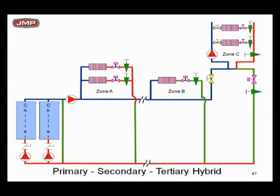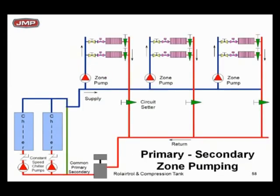Therefore, we call this primary-secondary-tertiary hybrid: it's got a little bit of primary-secondary in it, and it's got some tertiary loops as well. Another concept that's been around quite a while is the zone pump — again, it's a version of primary-secondary. Notice here we've got dedicated pumps for each chiller at constant flow, a little common pipe for the decoupler. Instead of having one big distribution pump, we have pumps in each zone. Any zone pump is pumping its zone and the distribution piping out to it — called primary-secondary zone pump.